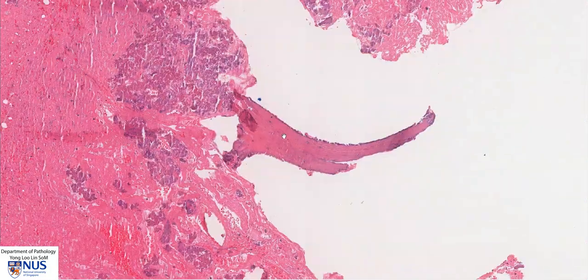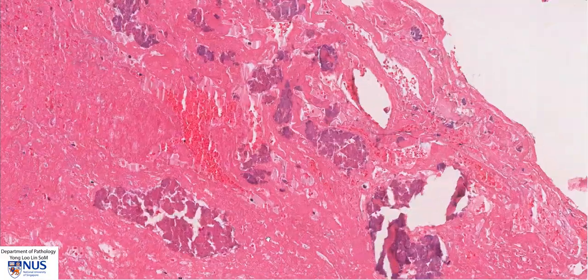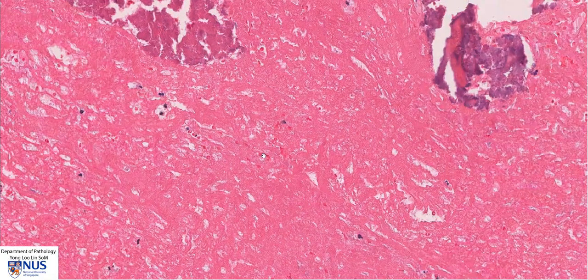Here we can see the bony trabeculae. These are fragmented, and in between we can see lots of fibrin. This pink material is fibrin.